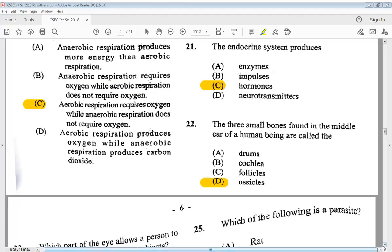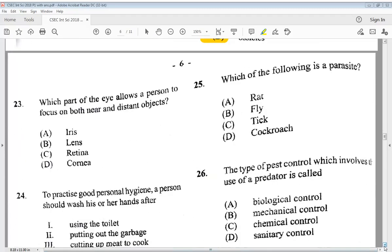Let's go to number 23. Which part of the eye allows a person to focus on both near and distant objects? A, iris, B, lens, C, retina, or D, cornea. We know that is B, lens.